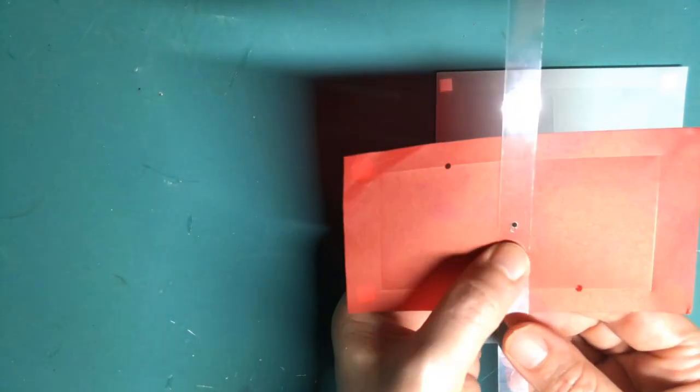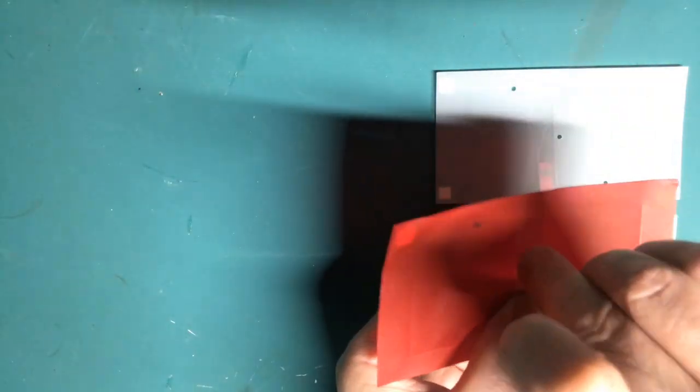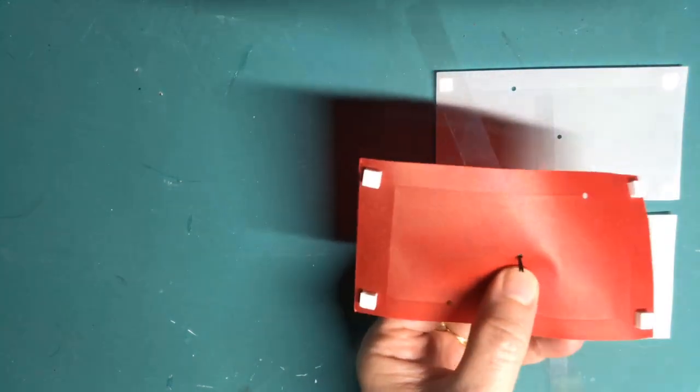The next step is to attach the acetate strip to the center of the vellum piece by placing a metal brad through it and securing it with a paper washer.